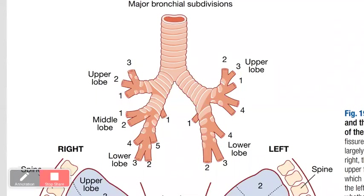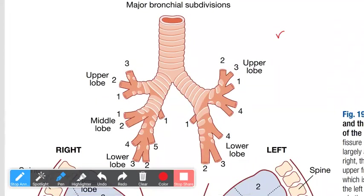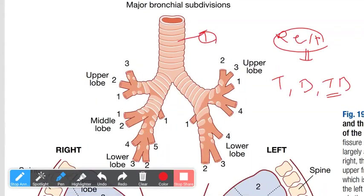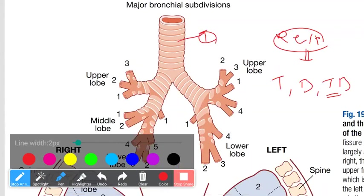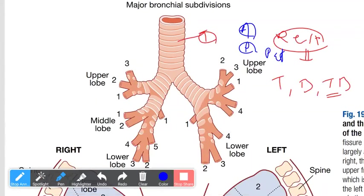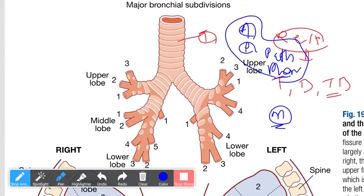We'll cover basic anatomy and then specific topics. The respiratory system relates to the trachea, bronchi, and the tracheobronchial tree. In medicine, anatomy, physiology, pathology, and pharmacology from previous years all come together. We start with anatomical concepts, then physiological concepts, then disease, so it's understood properly. Starting directly from topics without this foundation makes things difficult.